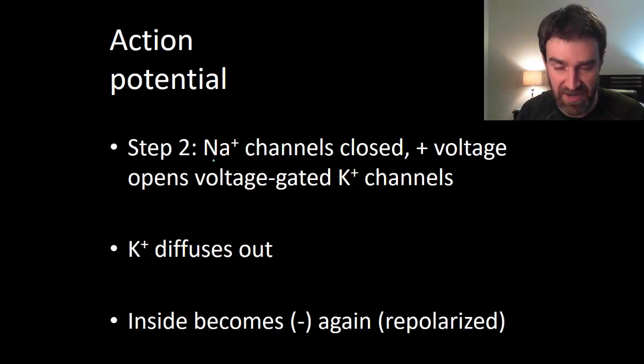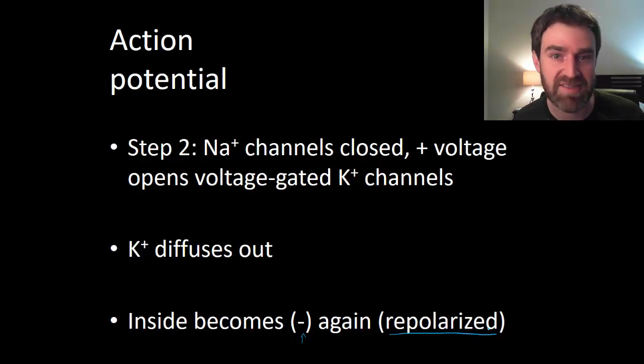In step two, the sodium channels have closed. The positivity inside the neuron has opened voltage-gated potassium channels. So now potassium has a chance to move out. And when those positive ions leave, that makes the inside negative again, just like it was in rest. And so that's why we say that we've re-polarized the neuron, because we've kind of returned it back to where it was voltage-wise, at least, at rest.